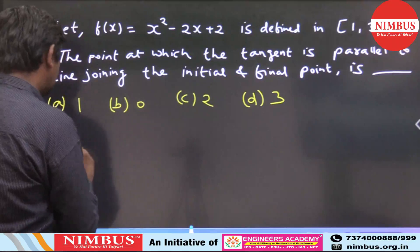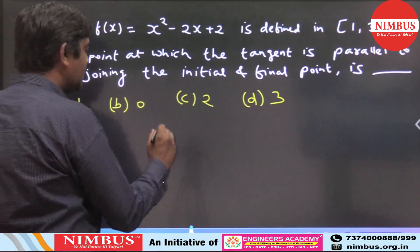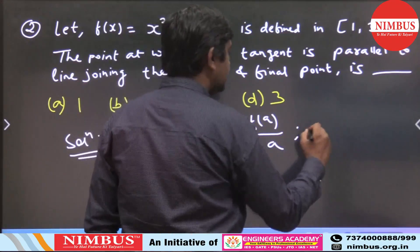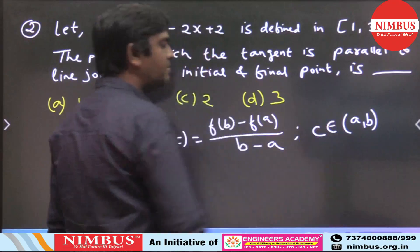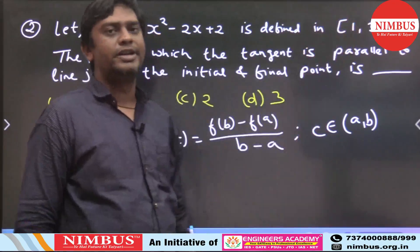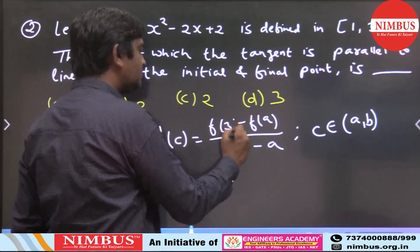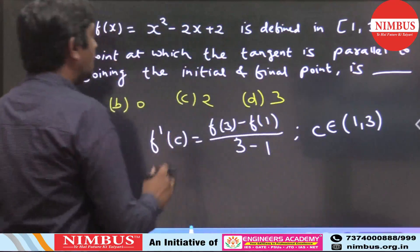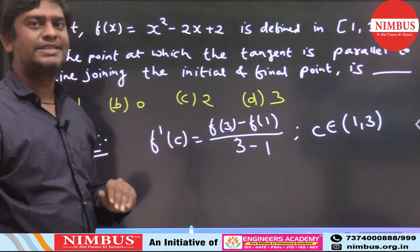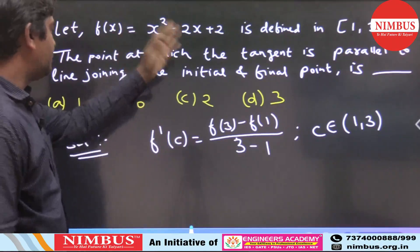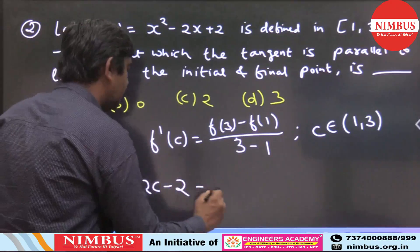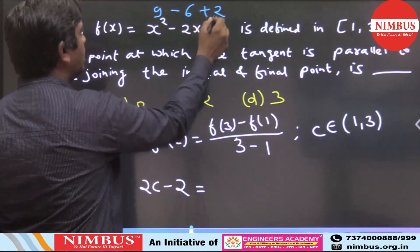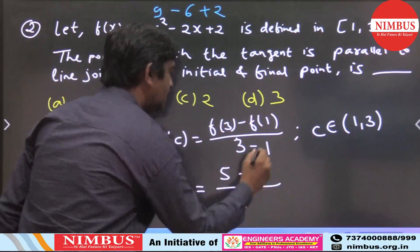There exists at least one value of c such that f'(c) = [f(b) - f(a)] / (b - a), where c belongs to the open interval (a, b). Put a = 1 and b = 3. Put f(3) and f(1), and below write 3 - 1. The derivative f'(x) = 2x - 2, so f'(c) = 2c - 2. f(3) = 9 - 6 + 2 = 5.